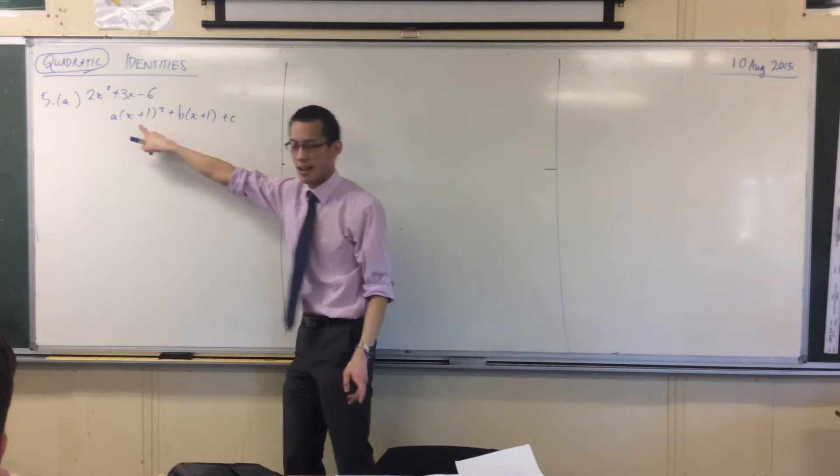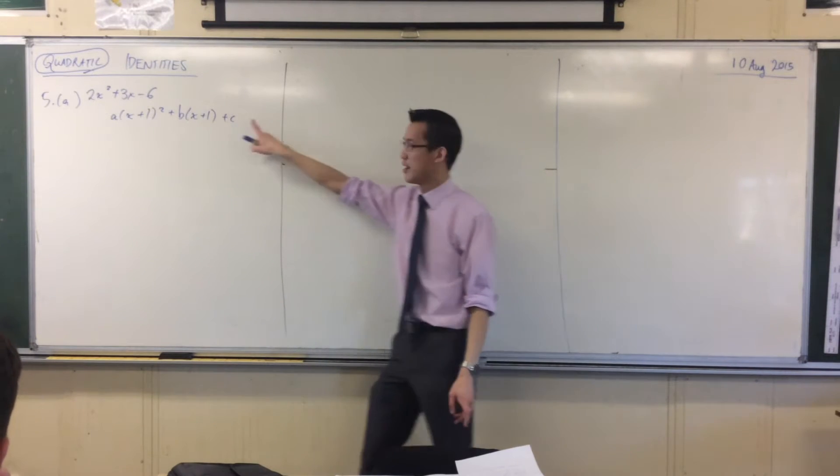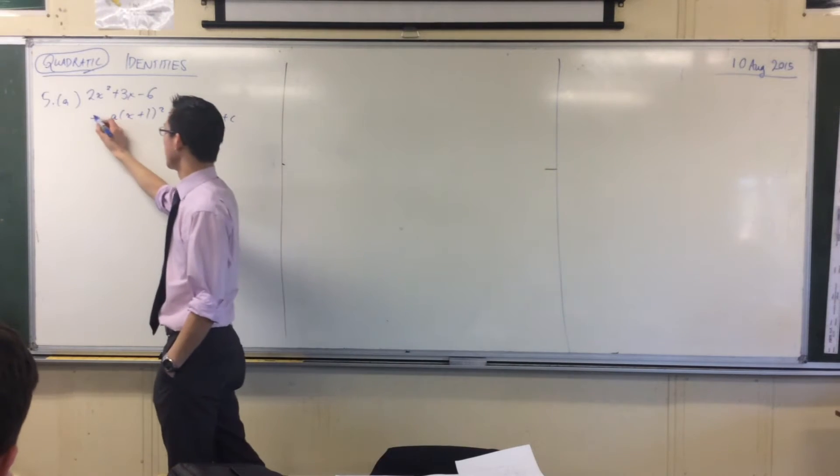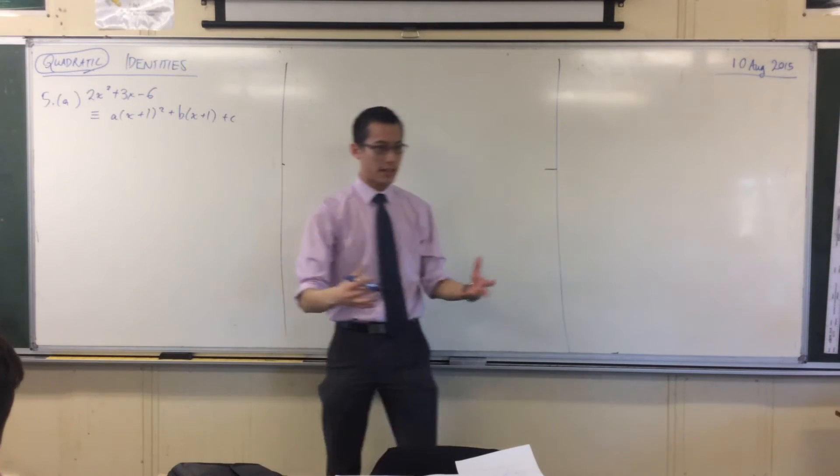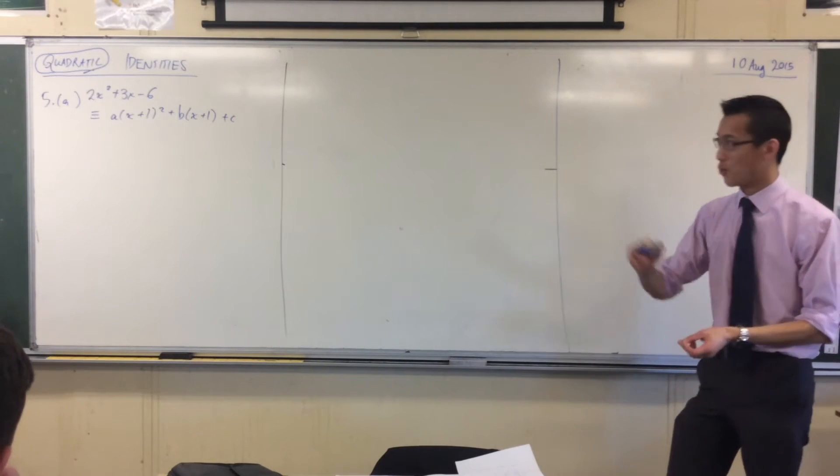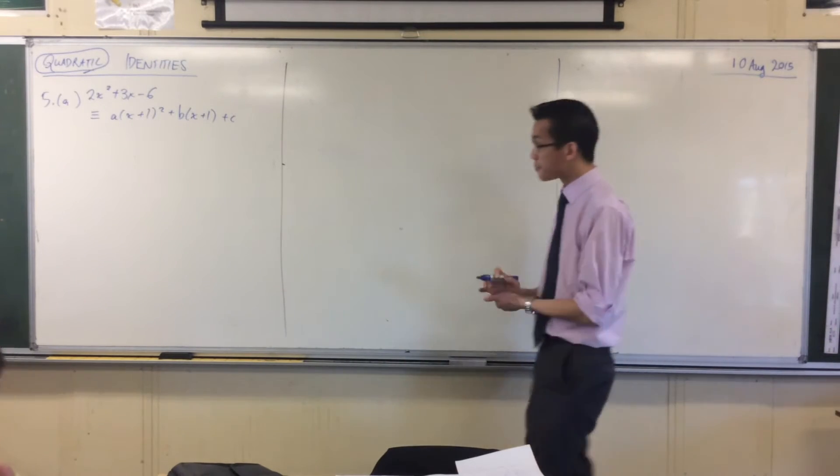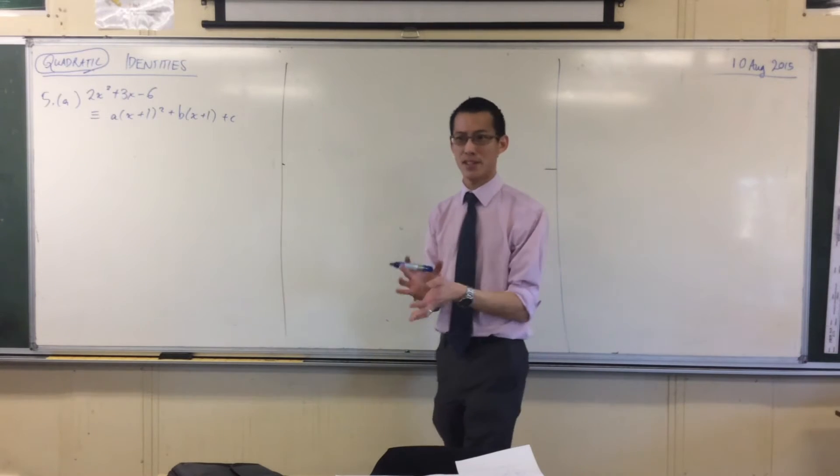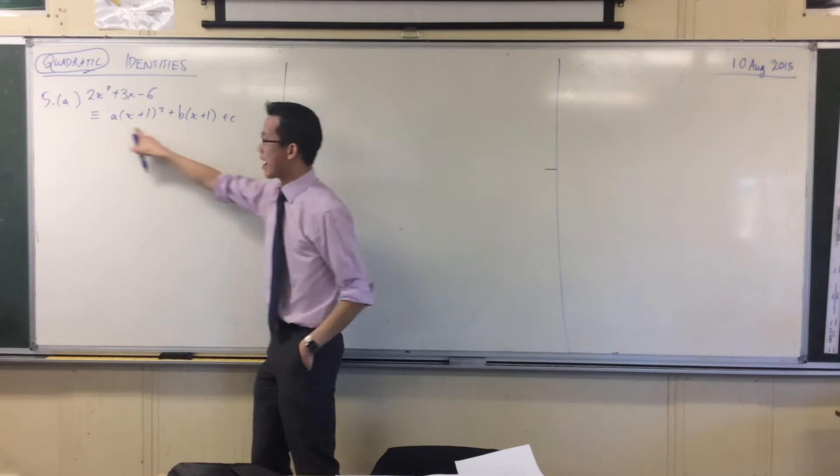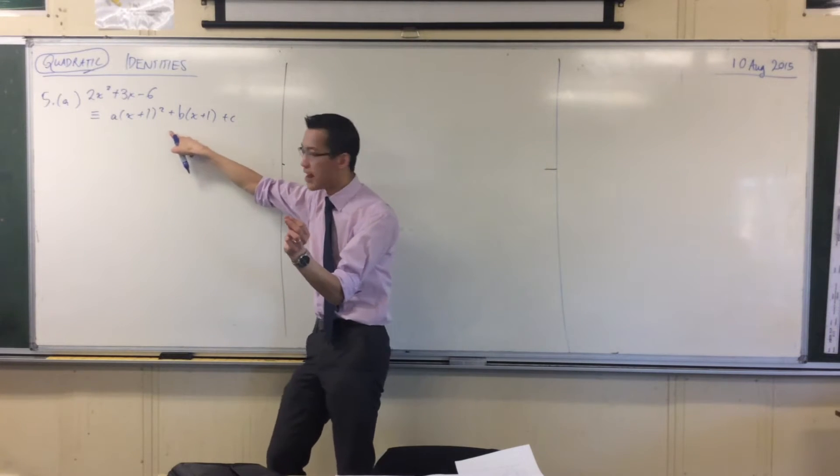Essentially what they want is this kind of identity—you've got two things that really are the same. How do you go about showing what the values of a, b, and c are? This is very similar to trig identities when we did auxiliary angle. On the right-hand side I have something I can expand, and then I'm going to compare coefficients.